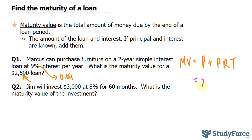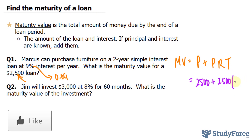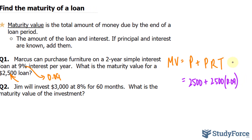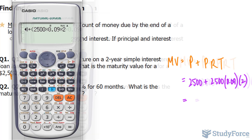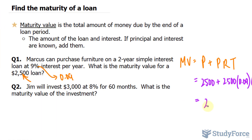Question one reads: Marcus can purchase furniture on a two-year simple interest loan at 9% interest per year. What is the maturity value for a $2,500 loan? We will replace everything: P is 2,500 plus 2,500 times the rate, which is 0.09, times 2. Using our calculator, 2,500 plus 2,500 times 0.09 times 2, we end up with 2,950. This right here is the maturity value.